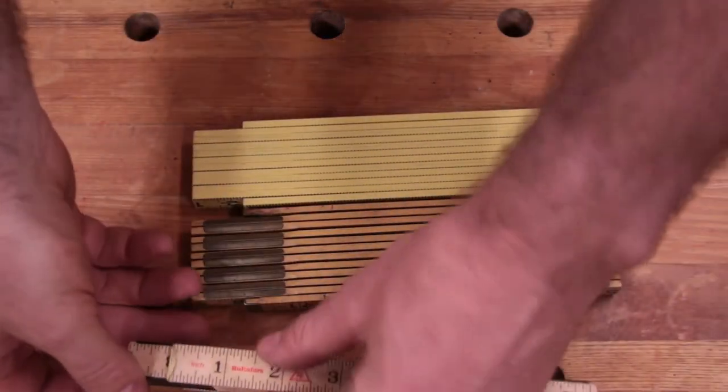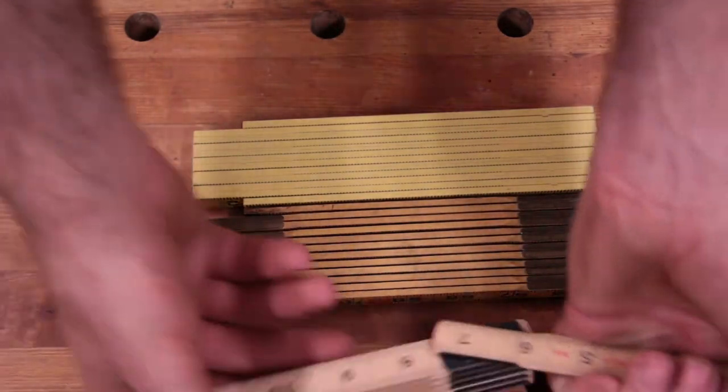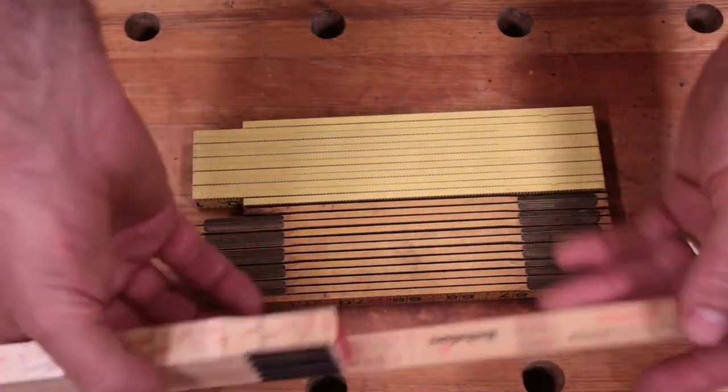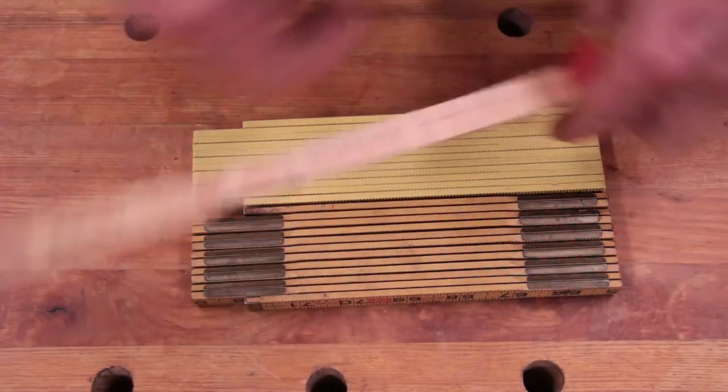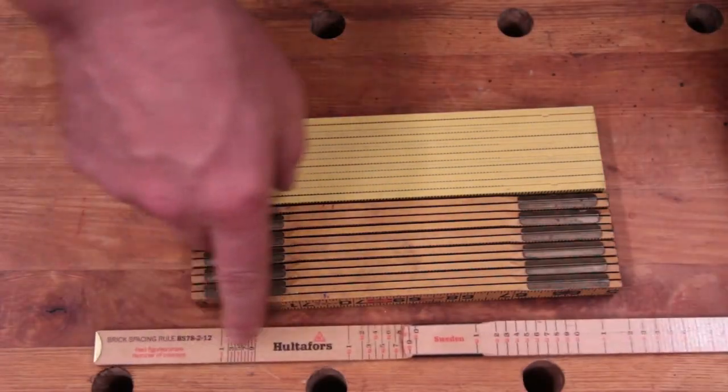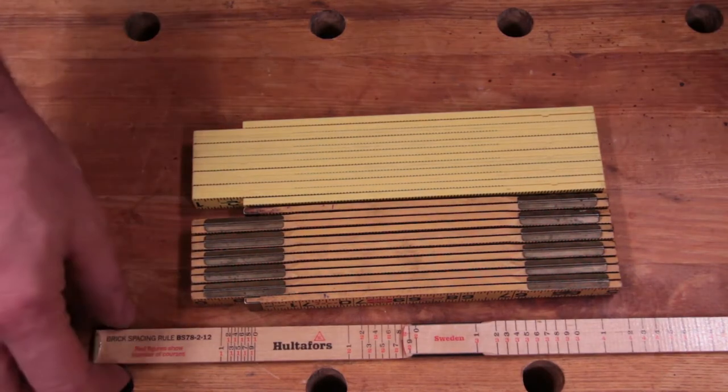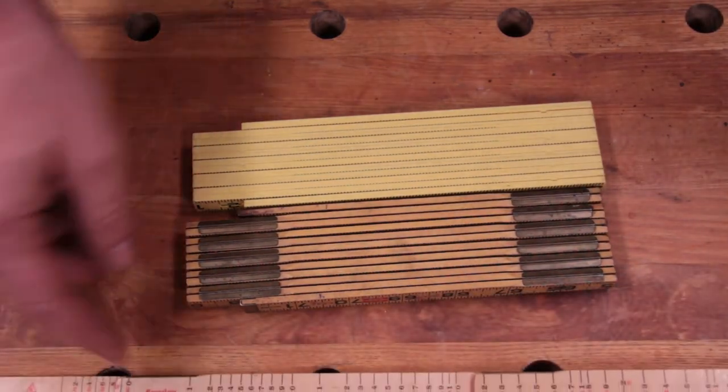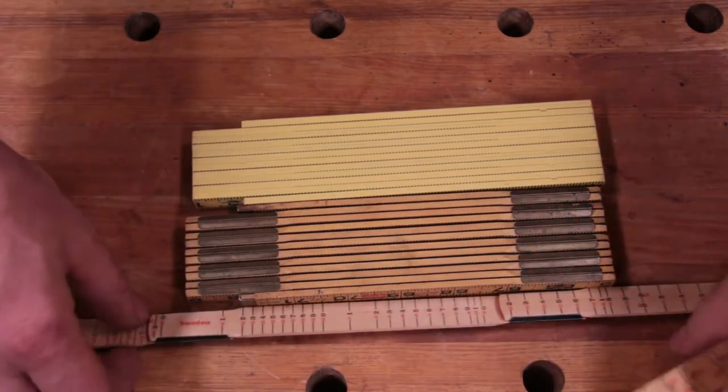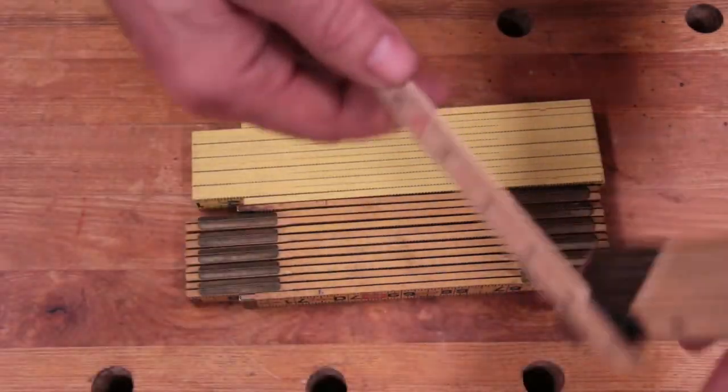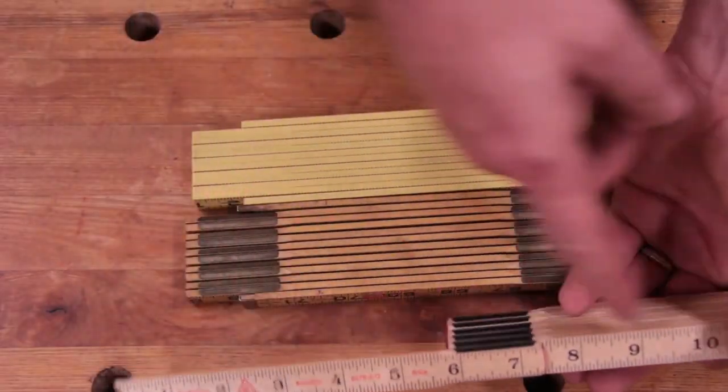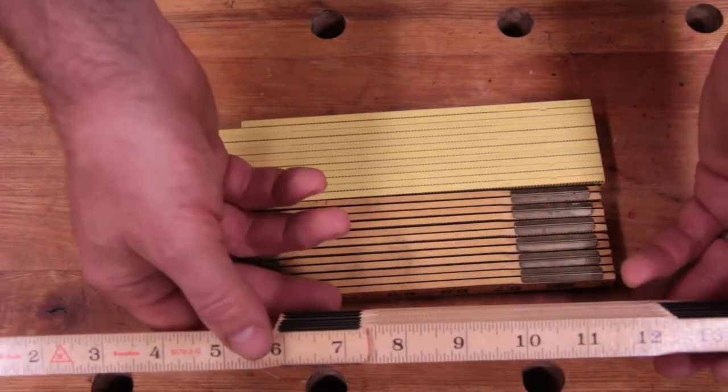I ordered this off of Amazon and it was supposed to have inches on both sides. But on the back I actually got one with a bricklaying scale, and I have no idea how to use a bricklaying scale. I'm sure there's tutorials somewhere on YouTube. But at least it has regular inches on one side, so this is still useful.